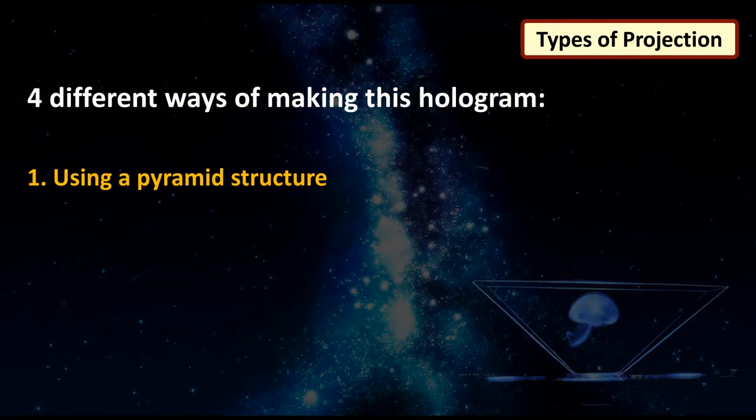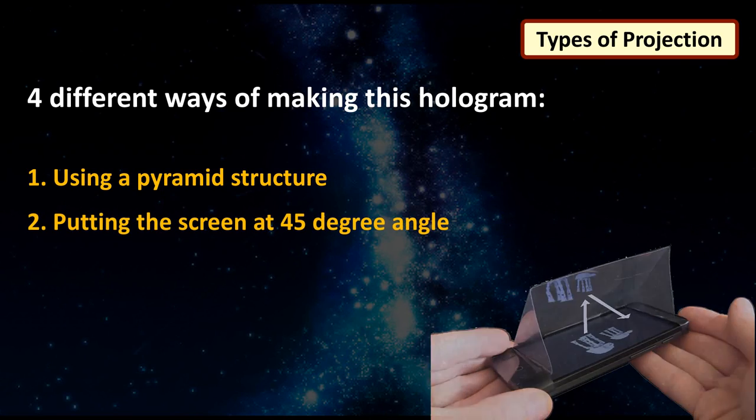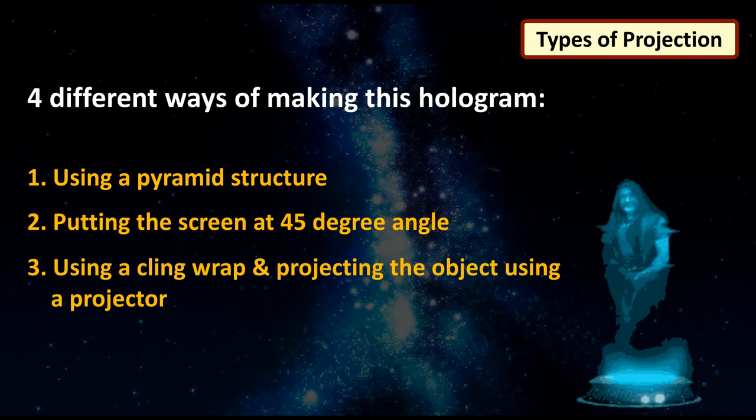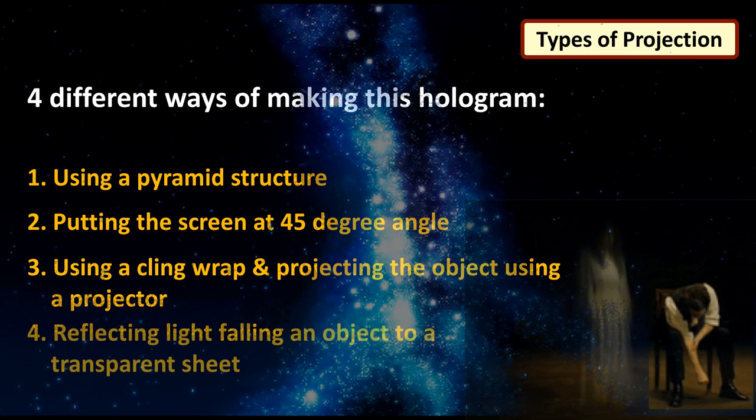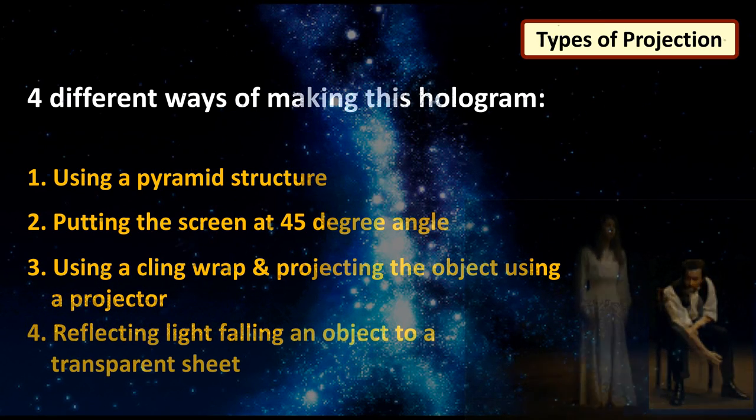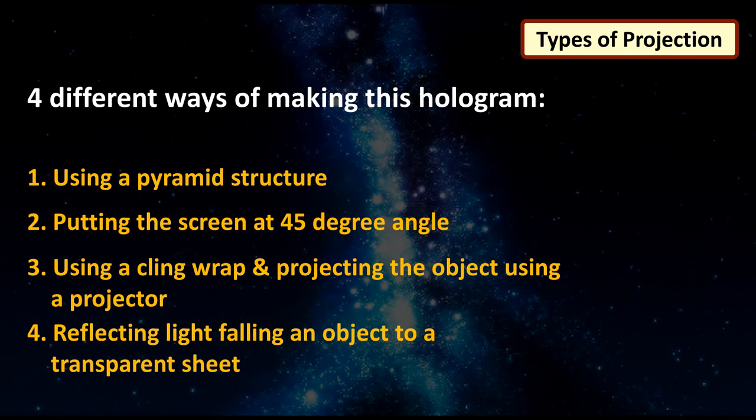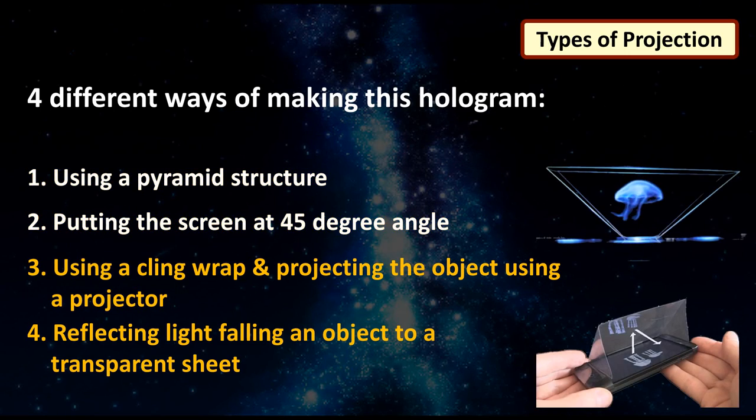Using a pyramid structure, putting the screen at 45 degree angle, using a clinch wrap and projecting the object using a projector or simply by reflecting light falling on an object on a transparent sheet. In this video, I am going to show first 2 methods of generating the Pepper's Ghost.